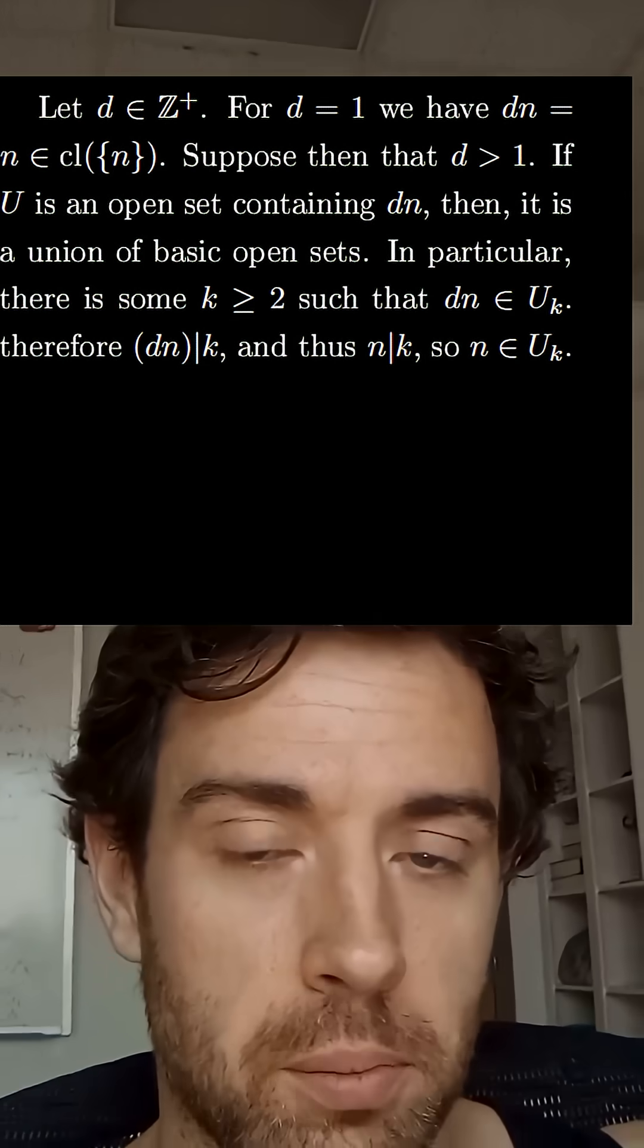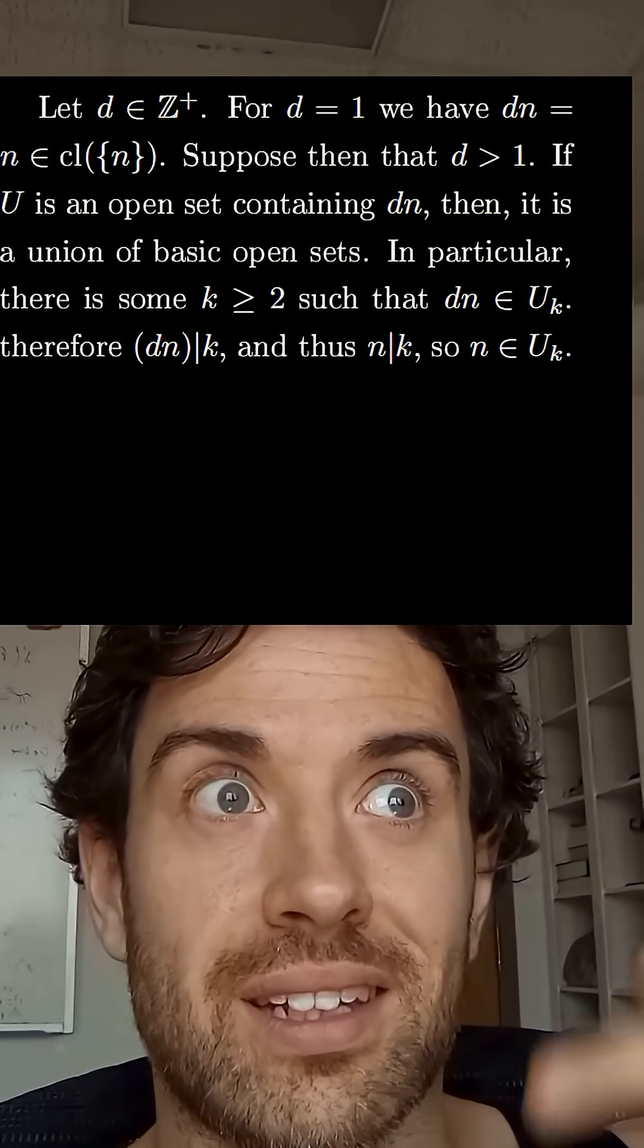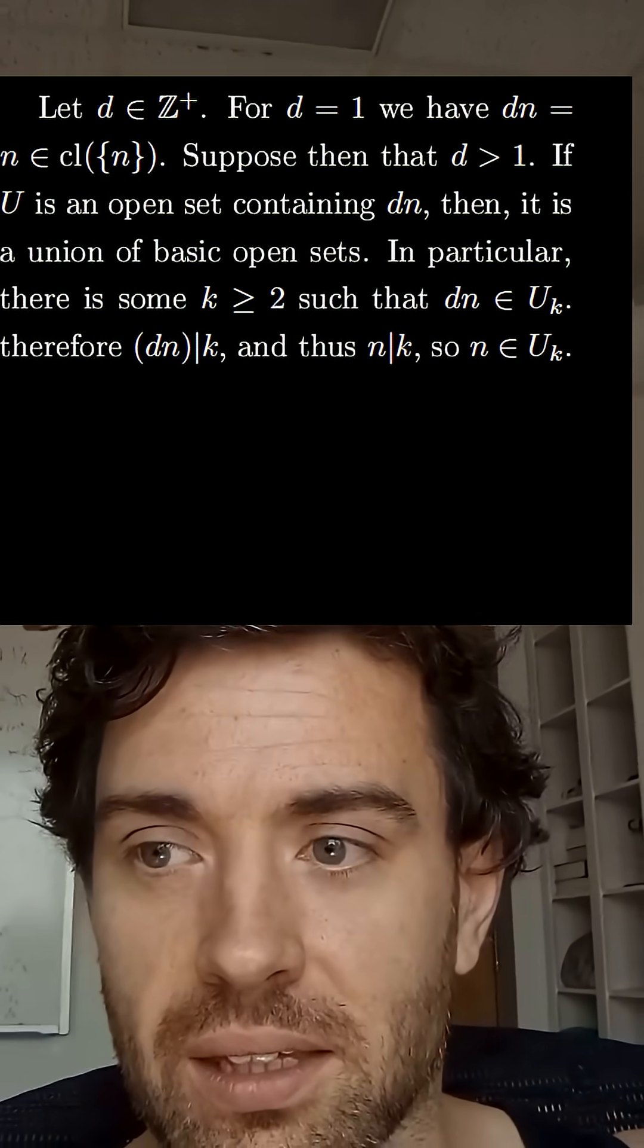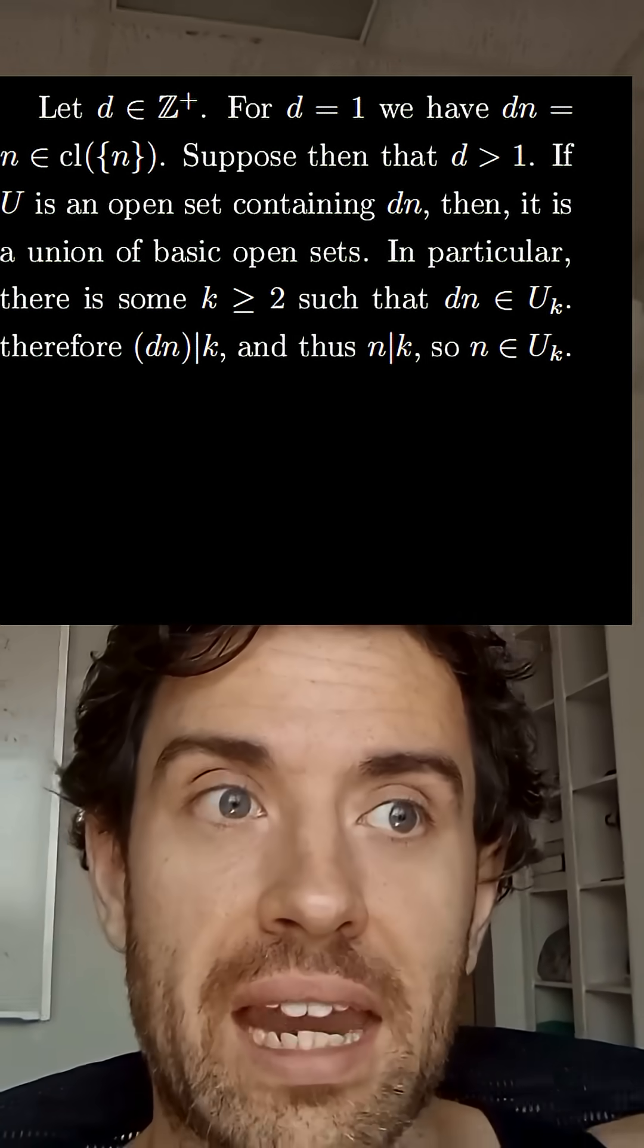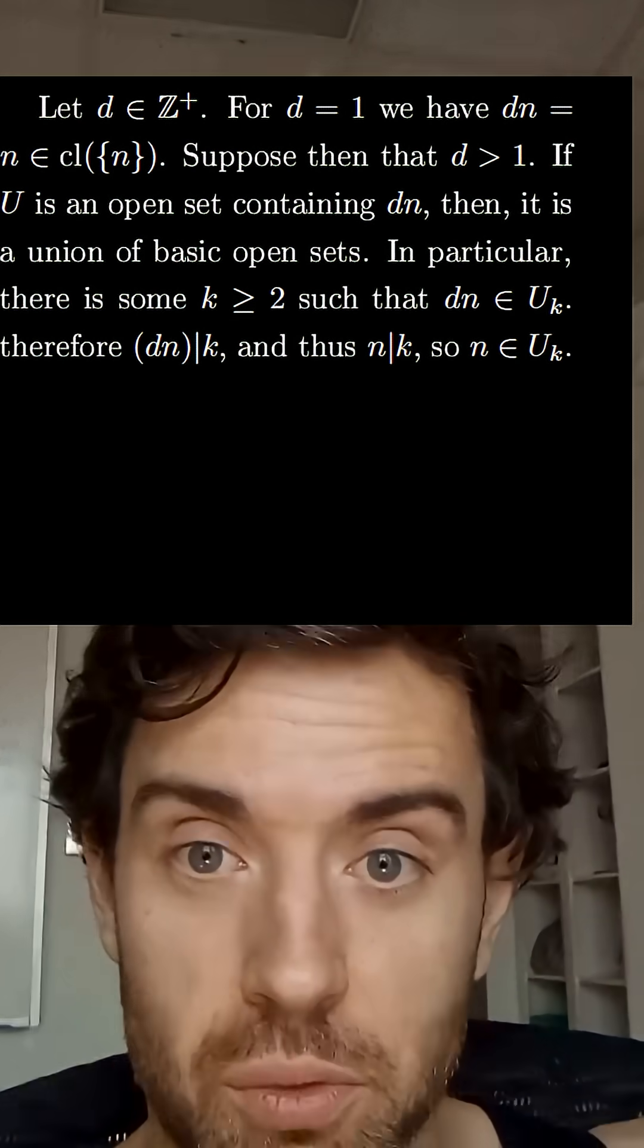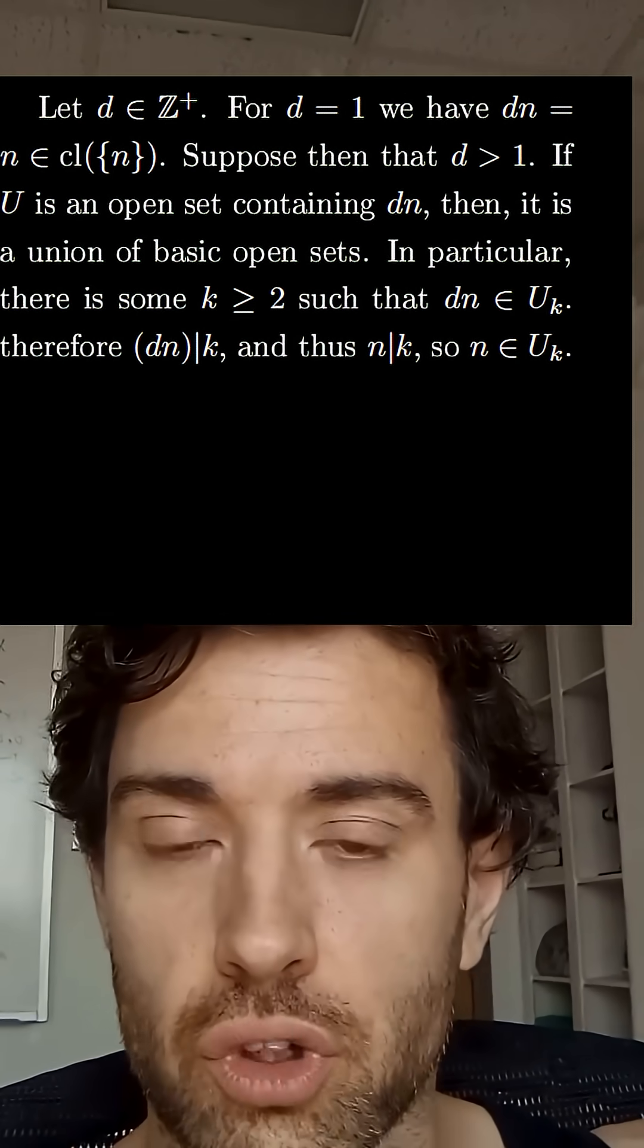basic open set U sub K which means that dn divides K but that means that n also divides K. So it has to be that n is an element not equal to dn which is in U K.